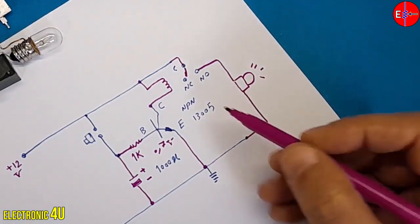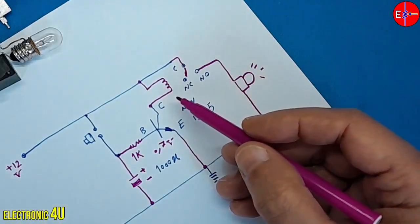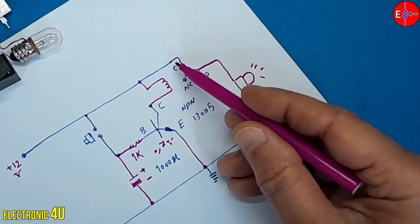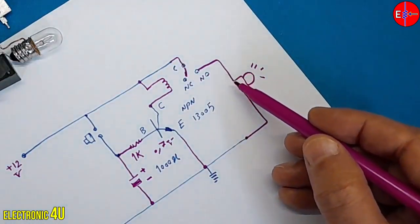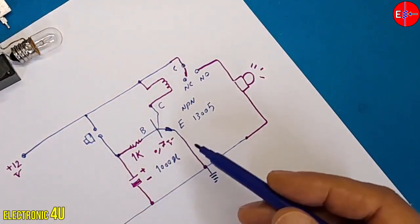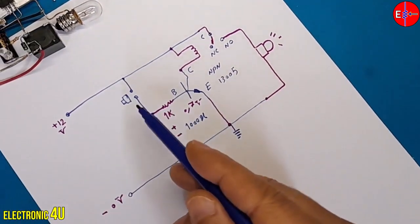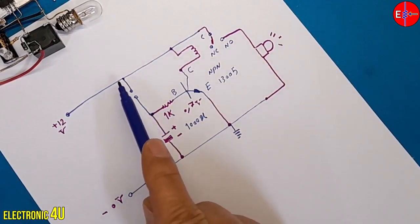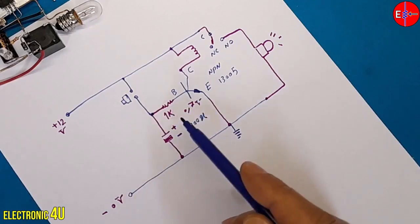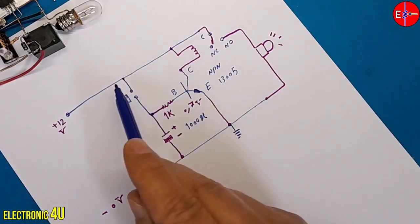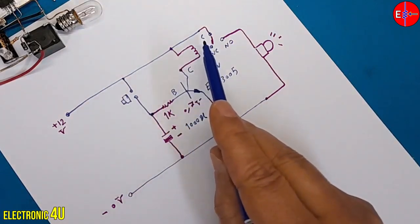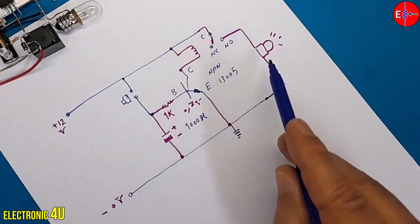I connect the second terminal of the lamp to ground or zero volts. So, when the relay coil is activated, the connector connects to the normally open terminal, and the current flows through this path to the ground, turning on the lamp. Now, let's see how the circuit works. When I press the button, the current flows through the 1 kilo ohm resistor to the base of the transistor, turning it on. The current passes through the relay coil, and the connector connects to the normally open terminal, turning on the lamp.